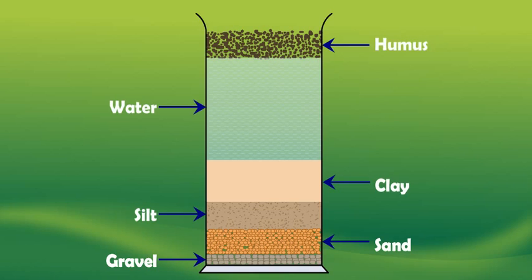In a good topsoil, gravel is present in very small amounts. The main rock particles present in topsoil are sand, clay, and silt. Depending on its composition, a soil can be classified as sandy soil, clay soil, or loamy soil. The sizes of rock particles in a soil have a very important influence on the properties of that soil.